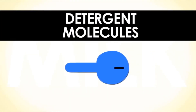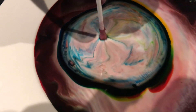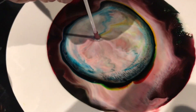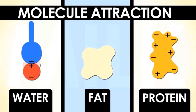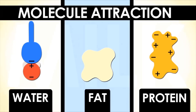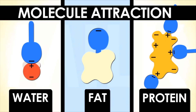Detergent has a negative charge and an uncharged part. Water has positive and negative charge, and the positive attracts the negative charge of the detergent. Protein has positive and negative charge but it is all over the place; the positive charge attracts the negative charge of the detergent. Fat has no charge and attracts the uncharged part of the detergent.